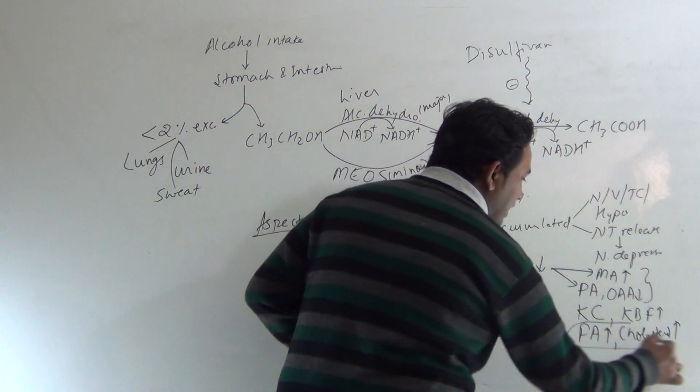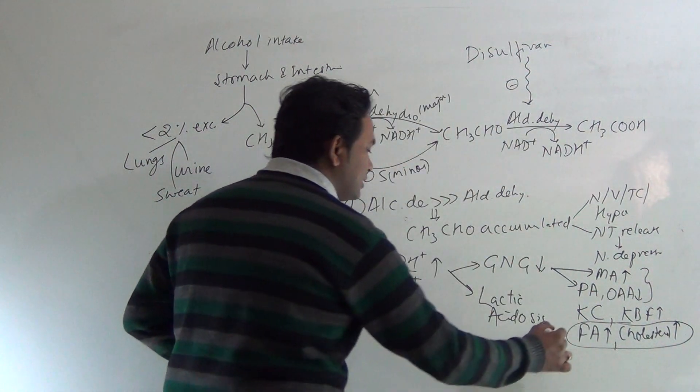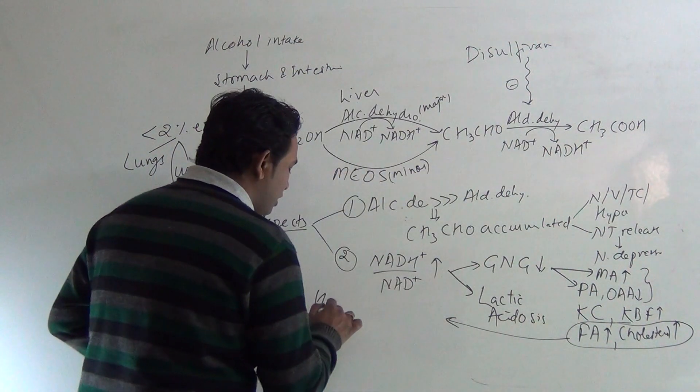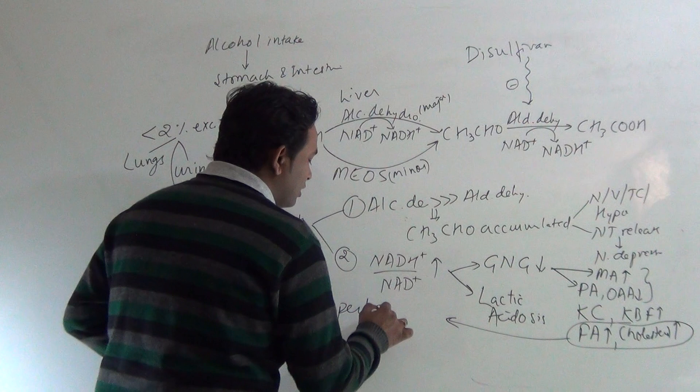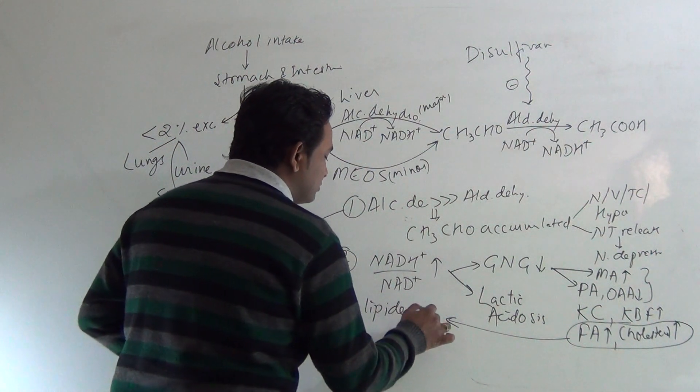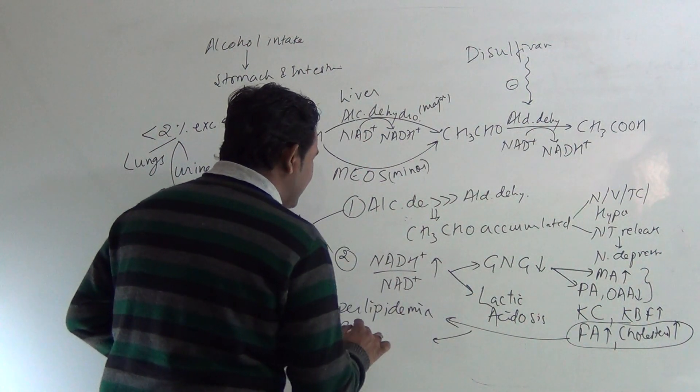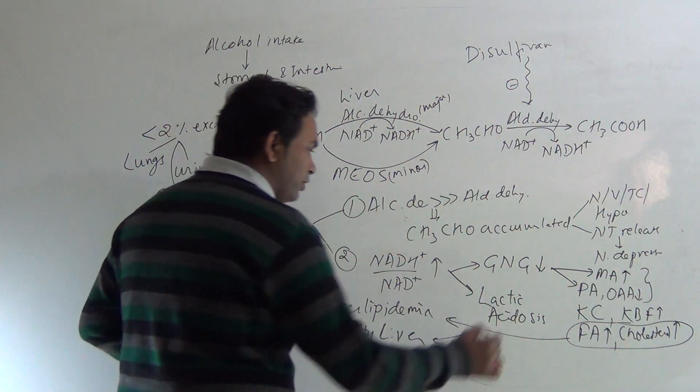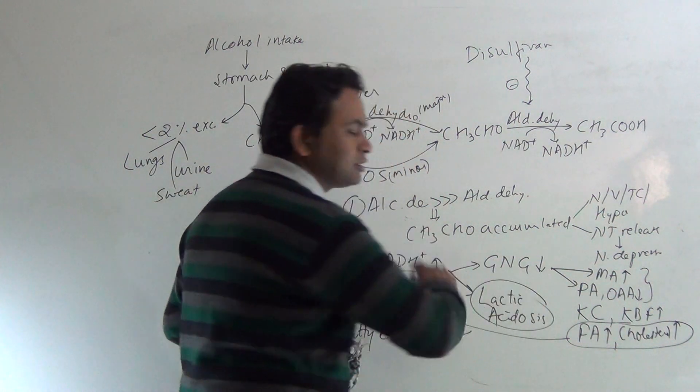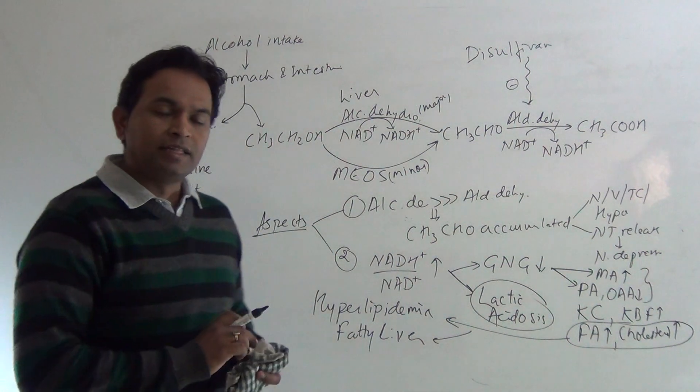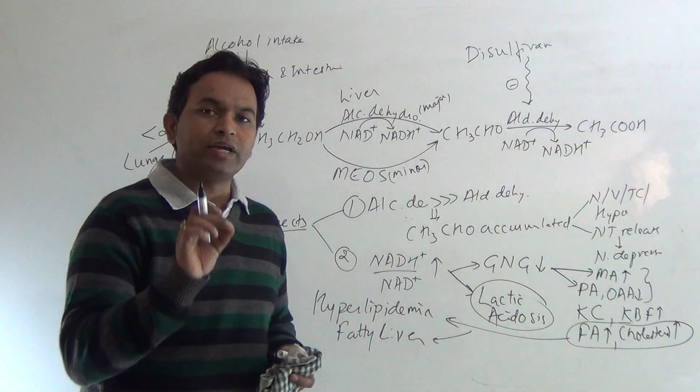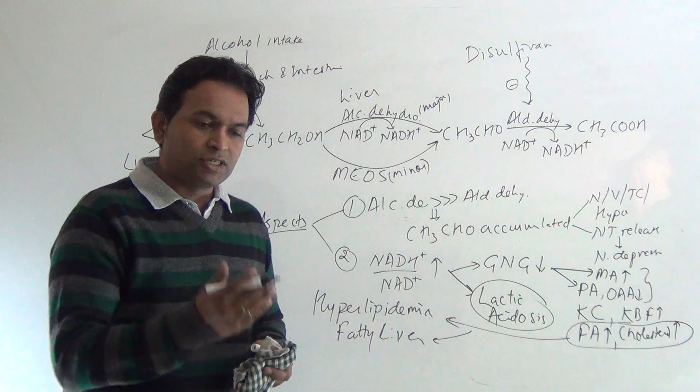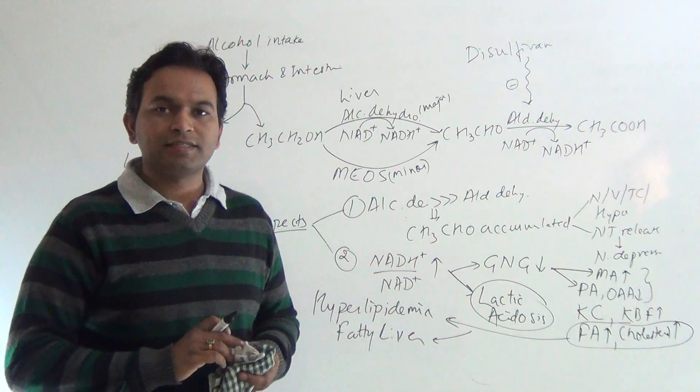Because of fatty acid and cholesterol synthesis, hyperlipidemia and fatty liver occur. Because of lactic acidosis, it is observed that the excretion of uric acid in urine decreases, which results in increased level of uric acid in blood.